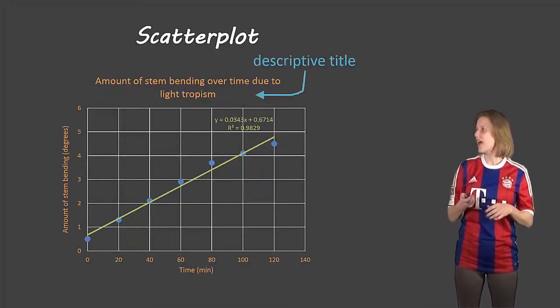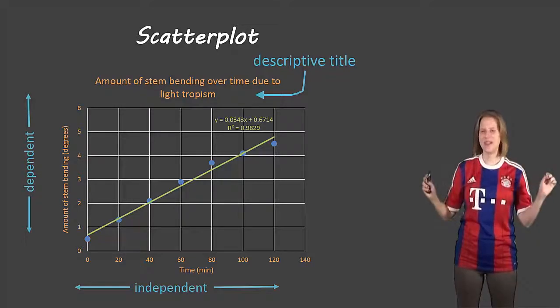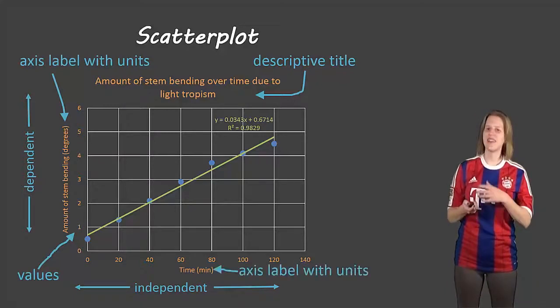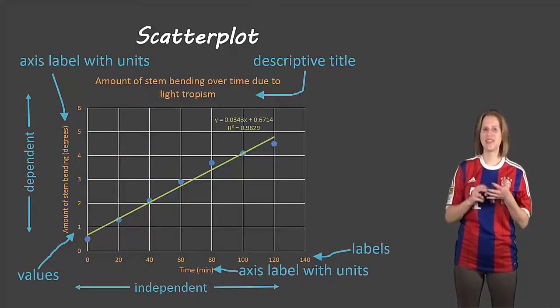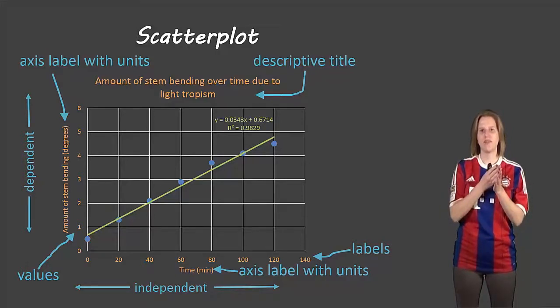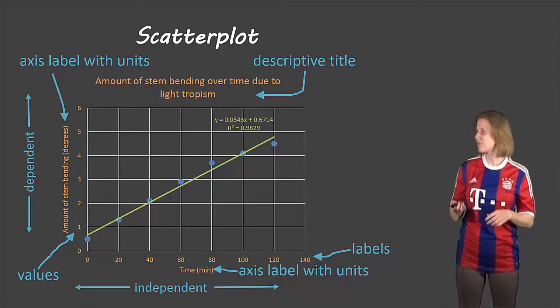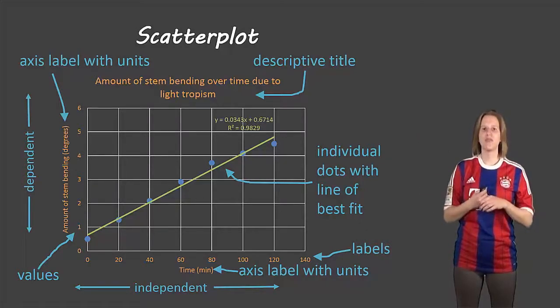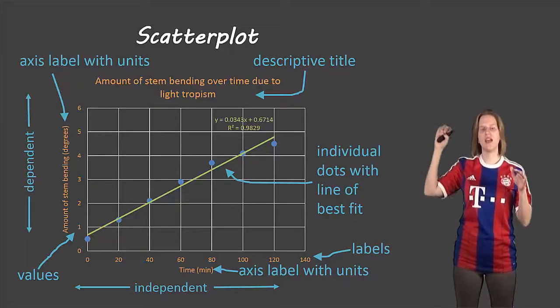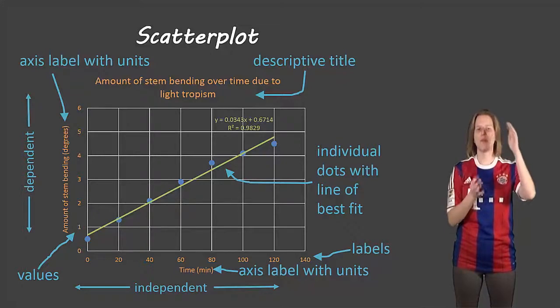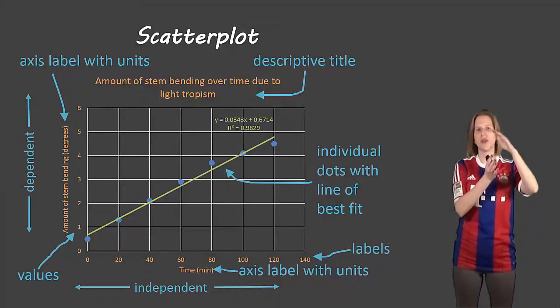For our scatter plots, again, descriptive title, independent variable along the x, dependent variable along the y, axis label with units and values, and then the other axis with units and values. This one, both axes must have the units because both axes have values that are related to each other arithmetically. Here we draw our individual data points and then we draw a line of best fit. Now a line of best fit is a line that tries to go through as many of the points as possible, and the points that it does not pass through, you try to have the same number above and below and the same distance between those points and the line.